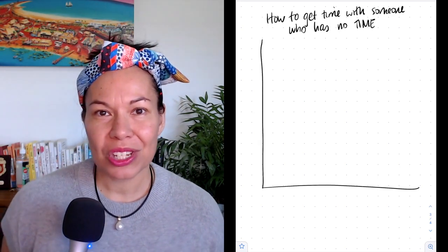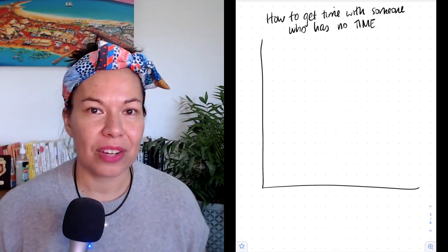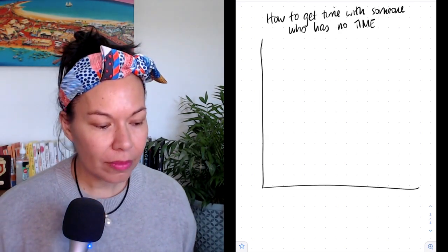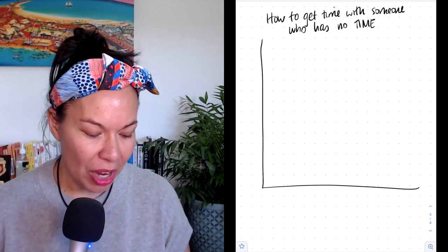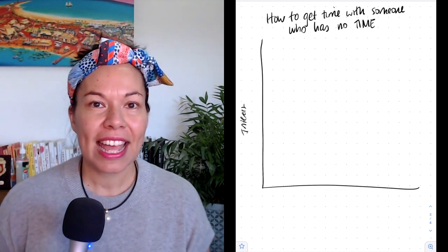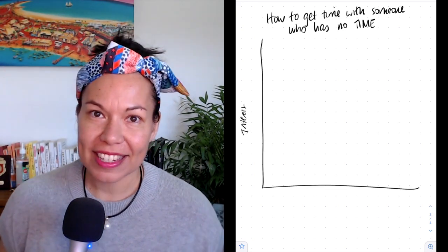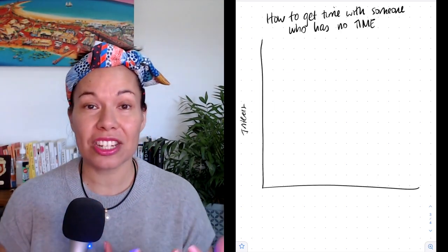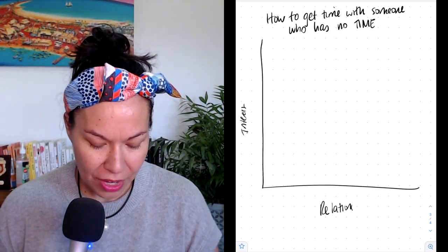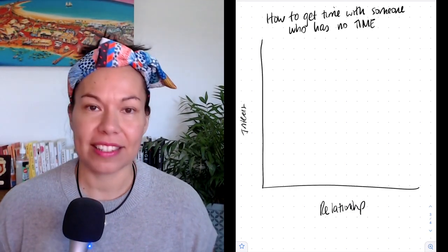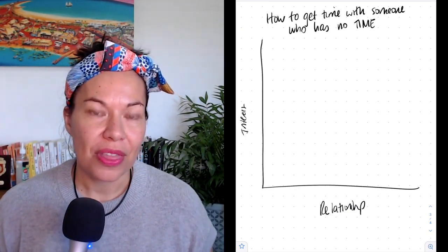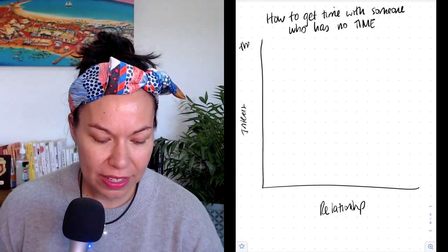When I was thinking about this question, I thought of two things that are actually really important when it comes to getting time. On the y-axis, I'm going to put the word interest. And then on the x-axis is your relationship to this person. So relationship is on the x-axis, and on the y-axis is interest.